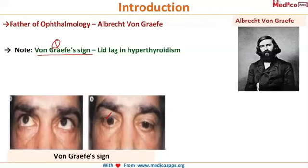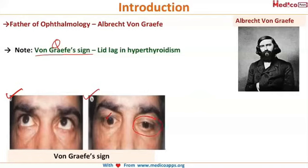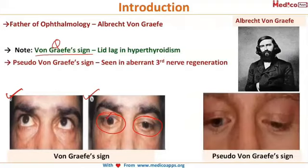The von Graefe sign is nothing but the lid lag that is present in hyperthyroidism. As you can see here, when the patient is looking up, the lids appear normal. However, when looking down, the upper eyelid on the left goes down with the eyeball, but on the right side the upper eyelid does not go downwards — this is known as lid lag and the von Graefe sign.